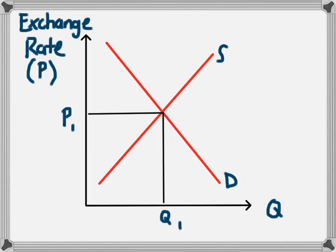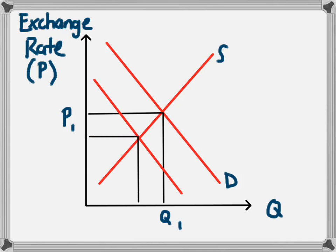If over a period of time the demand for these things falls — so if that country becomes less attractive for people to want to spend their money there — we'll have a decrease in demand, and that will lead to a depreciation in the currency. So demand moves from D to D2, and the currency depreciates from P1 to P2. This could be because there are fewer people buying exports of this country, less people from overseas investing in the country, or fewer tourists travelling to the country.